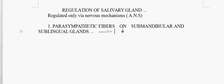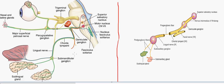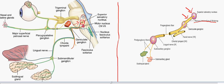Now we will talk about the preganglionic fibers. Looking at the picture here, the parasympathetic fibers initially arise from the superior salivary nucleus, which is present at the pons. The preganglionic fibers arise from the pons and they travel to the nervus intermedius of Vriesberg. This intermediate nerve is a branch of our facial nerve.